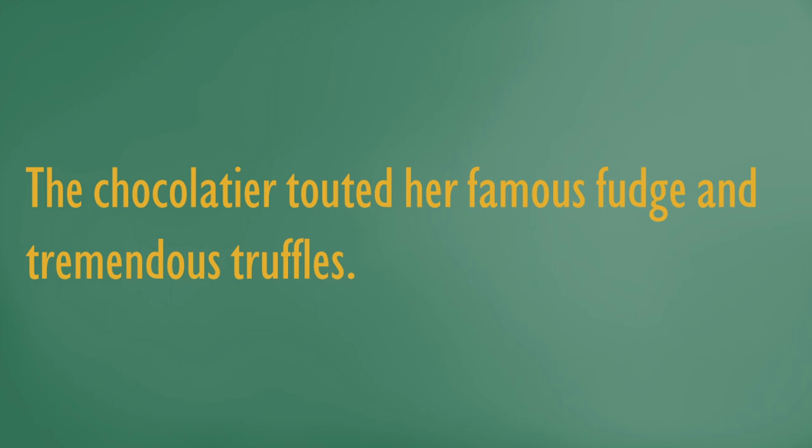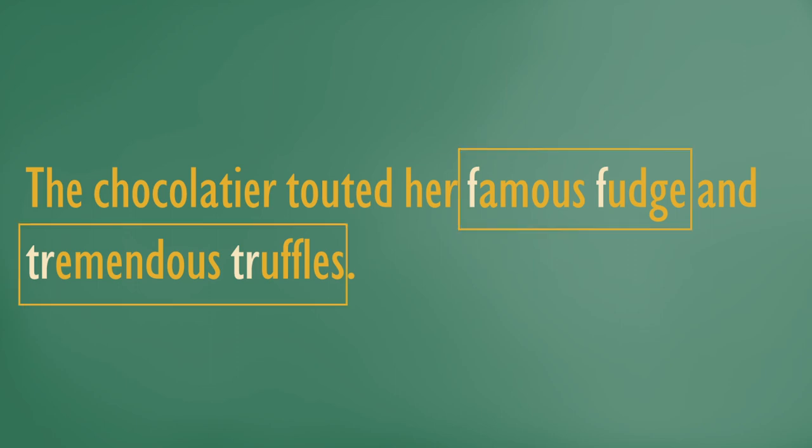Obviously, alliteration like this can be a little bit cartoonish, and it can be seen as a cheap trick or a shallow way of showing off. So a less-sustained string of starting sounds may serve as a superior strategy. Sparing alliteration is less likely to be mocked and more likely to provide a subtle reinforcing effect. For example, in 'The Chocolatier Touted Her Famous Fudge and Tremendous Truffles,' the little alliterative garnish serves the dual purposes of prettying up the prose and reinforcing the connections between the nouns and their modifiers. Not only do they go together, but they sound the same, doubling up on their structural unity and making the pairs more memorable.